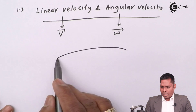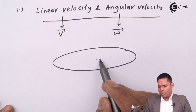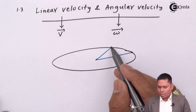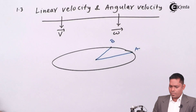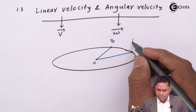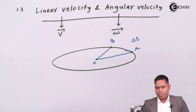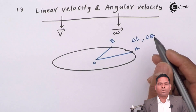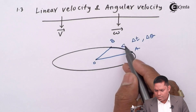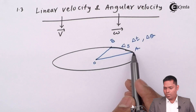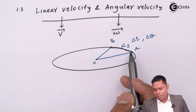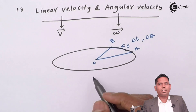Suppose I have a circle and the object is moving in anticlockwise sense from position A to position B. This center point is O. As it moves from A to B, it takes time delta T. The angle traced is delta theta. The arc length delta S is the distance — the actual path described by the particle along this line. This is basically the arc length.